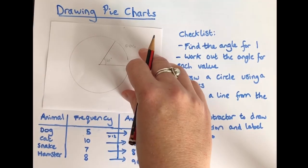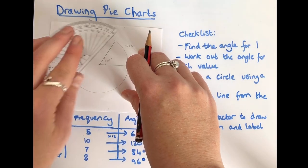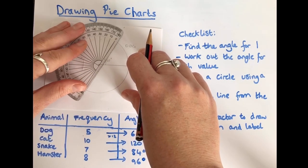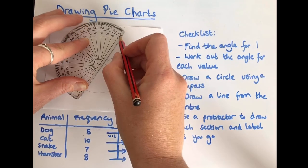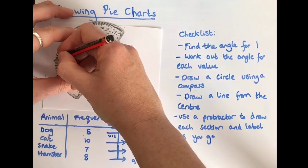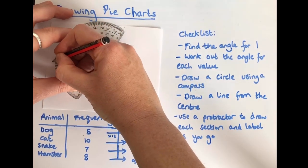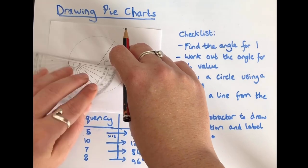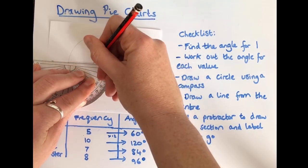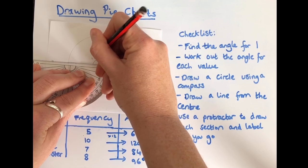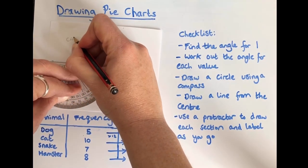Now I keep going round. I'm going to do 120 degrees for the next one. So right in the centre line up that new line edge for zero all the way around to 120 which is all the way over here. Draw that line. Make sure I write the angle because I might forget which one is which. And that was for cat.